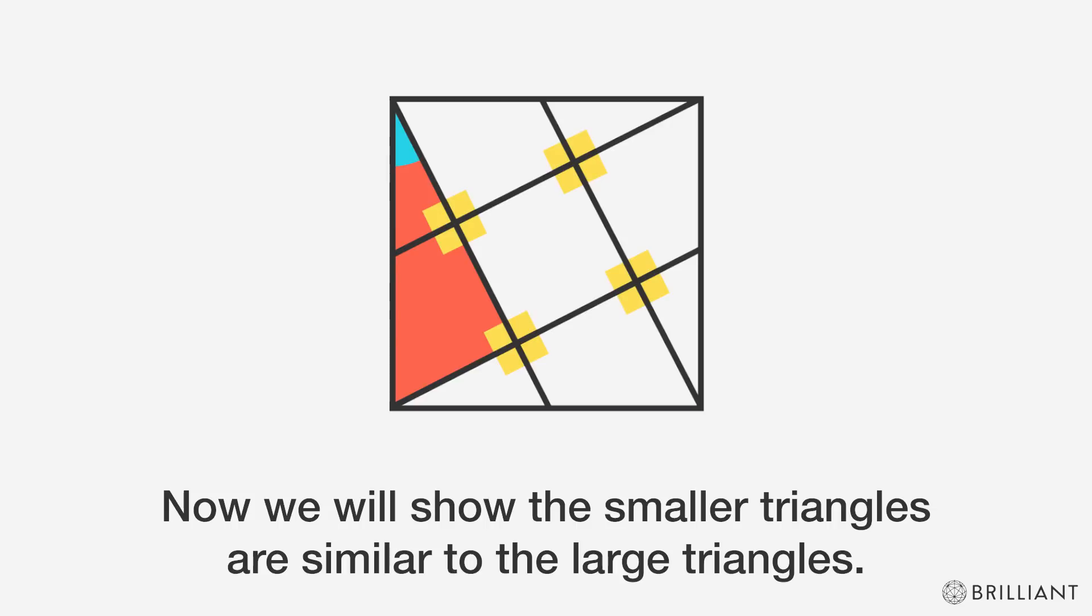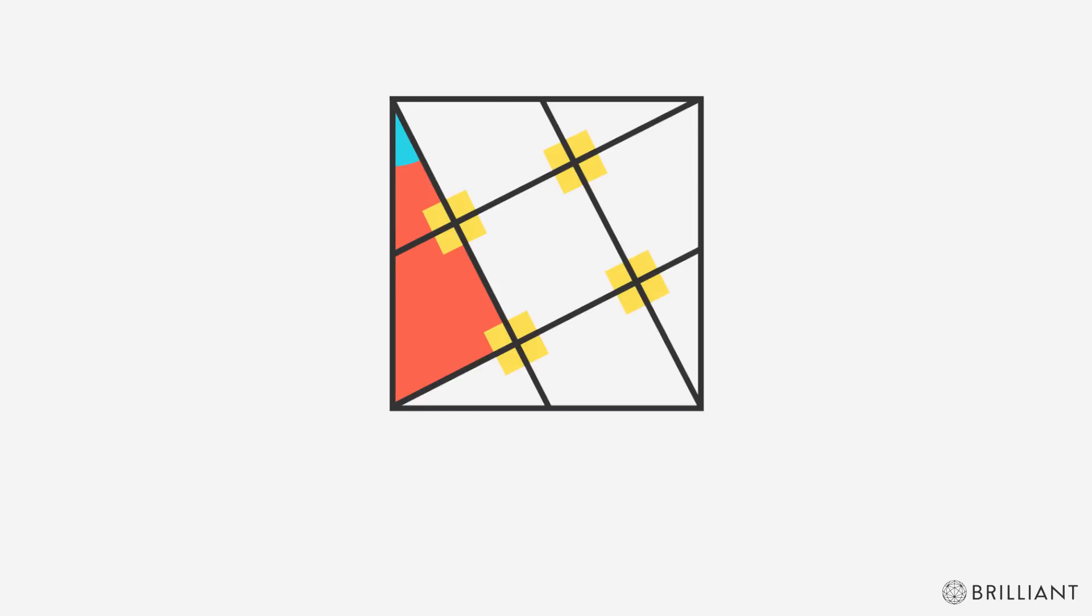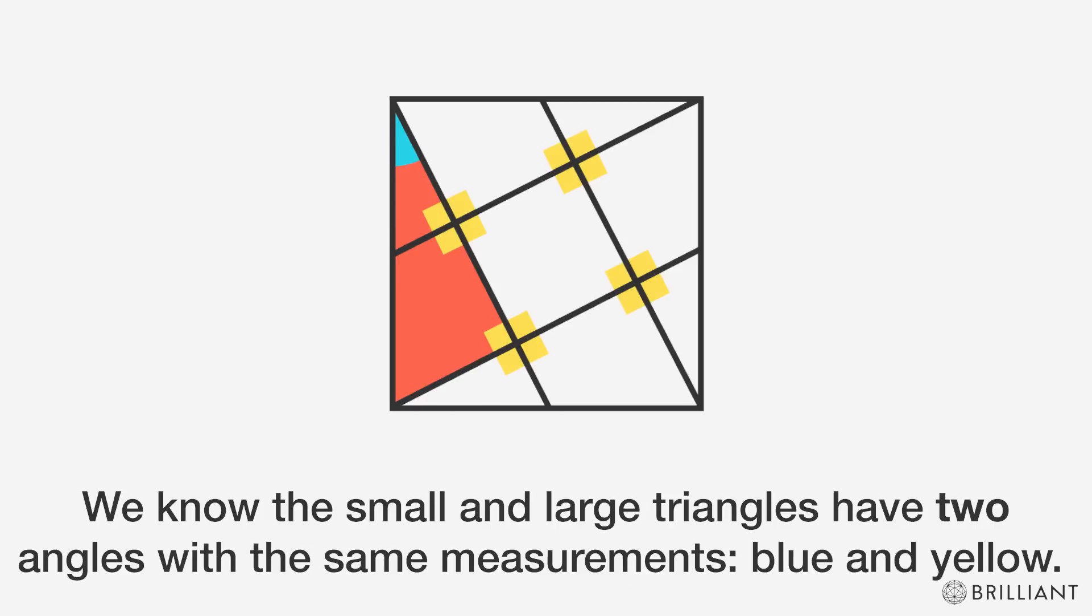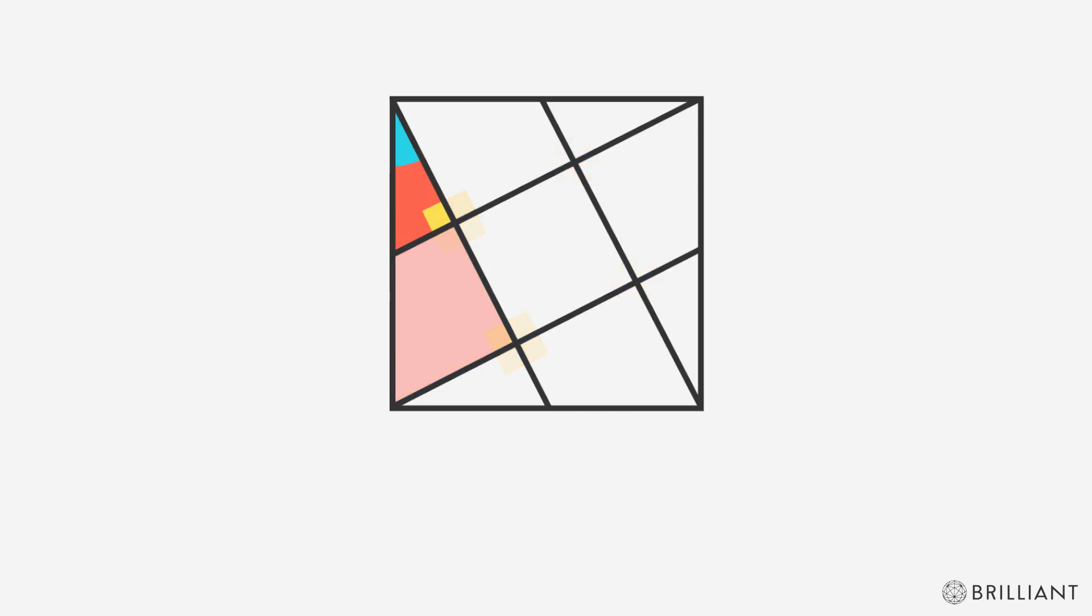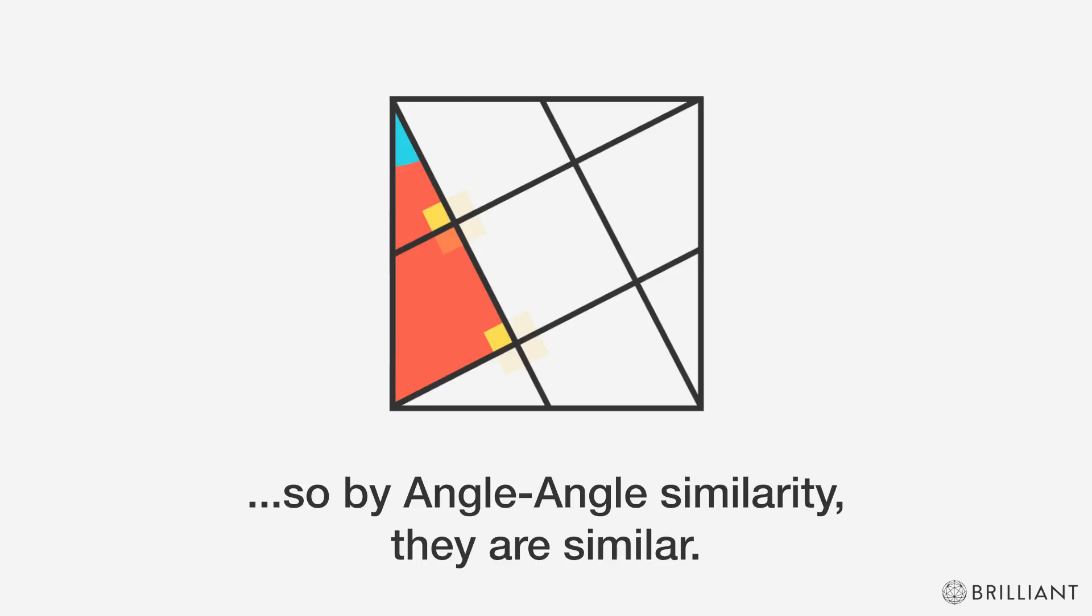Now we will show the smaller triangles are similar to the large triangles. We know the small and large triangles have two angles with the same measurements, the blue angles and the yellow angles. So by angle-angle similarity, they are similar.